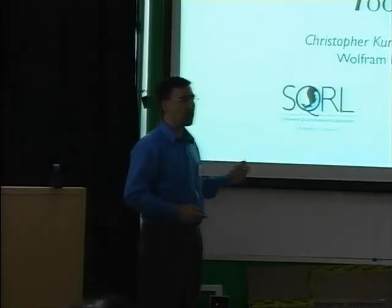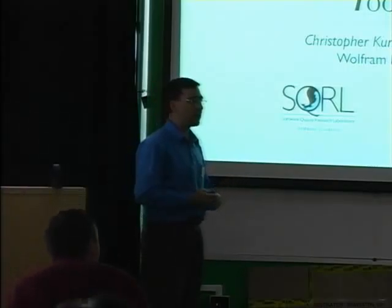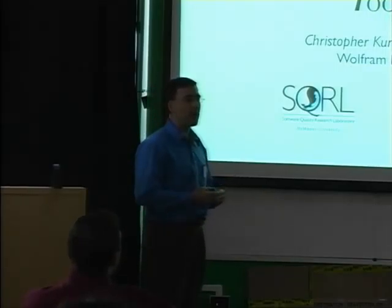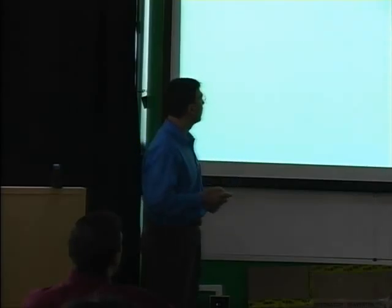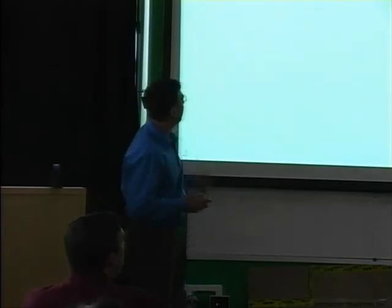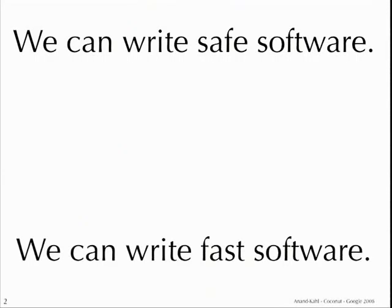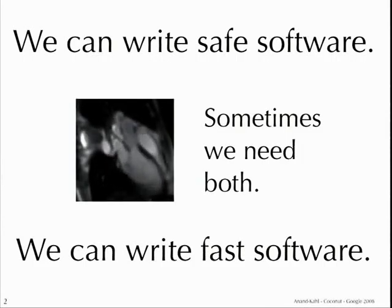Coconut is not a compiler. It does some things that a compiler does, but it does other things that a programmer usually does. The idea is to be able to optimize code better by crossing the boundary between what's normally done by a programmer and normally done by the compiler. We can now write safe software, and at least some of us can write fast software. Sometimes we need to write both — for example, for real-time medical imaging applications, both time and safety are critical.